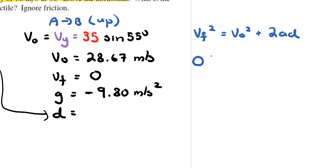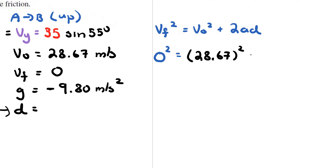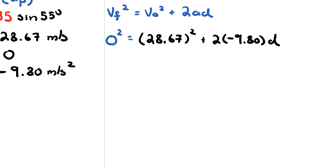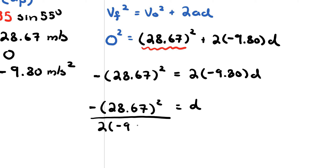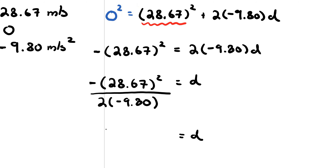Plugging in: 0 squared equals 28.67 squared plus two times negative 9.80 times D. Rearranging, negative 28.67 squared equals two times negative 9.80 times D. Dividing both sides by two times negative 9.80, the maximum height is roughly 41.938 meters, which rounds to approximately 42 meters.